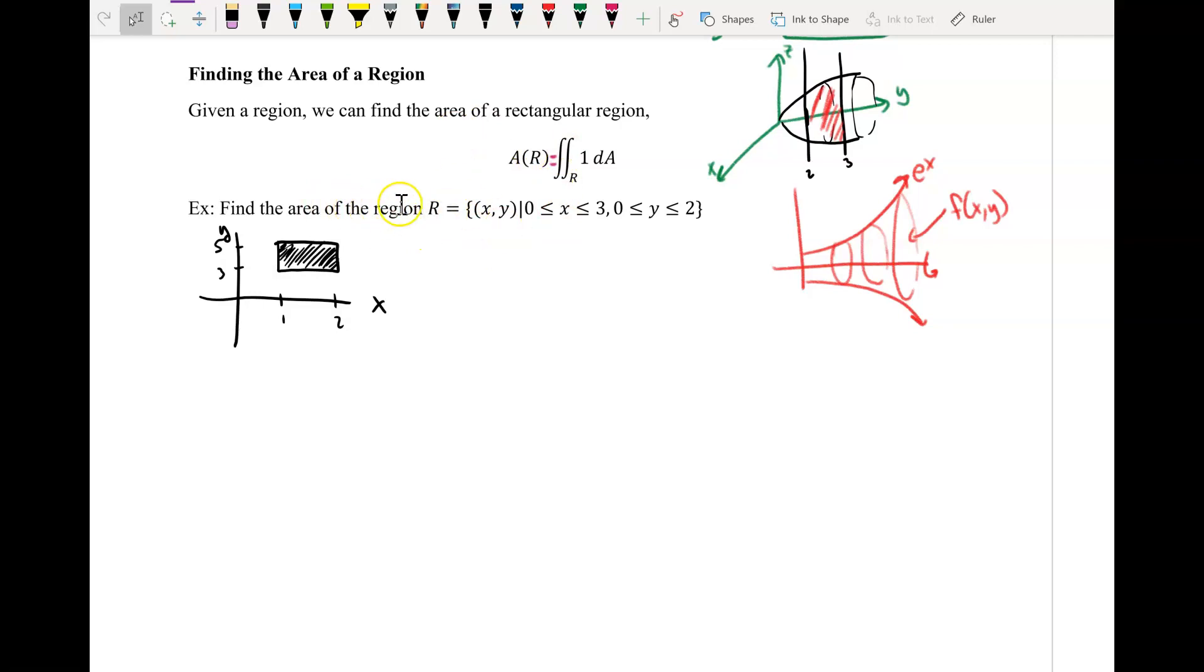So I want to find the area of the region R, and x is between 0 and 3, and y is between 0 and 2. So all I'm going to do to find the area of the region is I'm going to take the double integral of 1, and then I'm just going to write dx dy, it doesn't really matter. So my x in this case will be from 0 to 3, and my y in this case will be from 0 to 2.